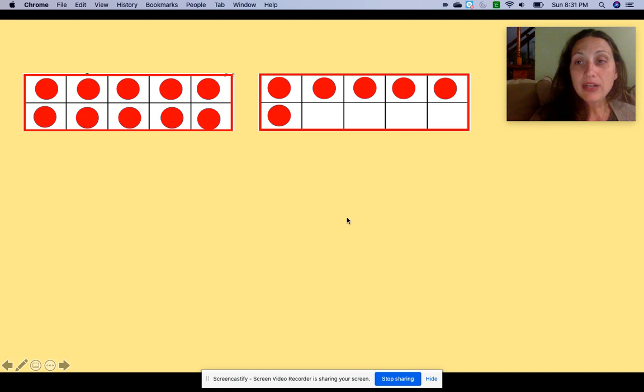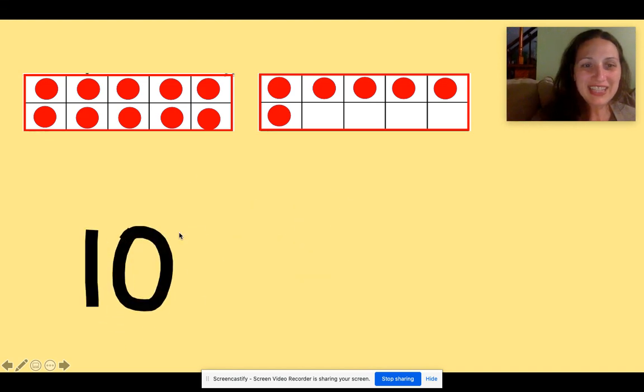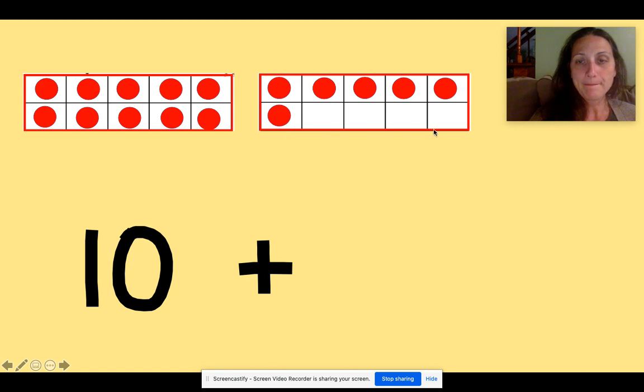Okay, it is time to make our addition sentence. This number of counters plus this number of counters. How many counters are in my first tens frame? Well, it's full, so I know that it must have 10. And there's the number 10. Okay, plus how many counters in this tens frame? If you're not sure, we can count. Let's count together. One, two, three, four, five, six. Six counters in my second tens frame.